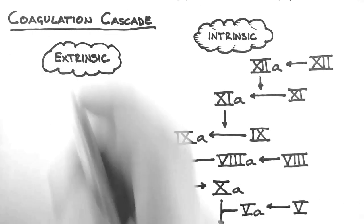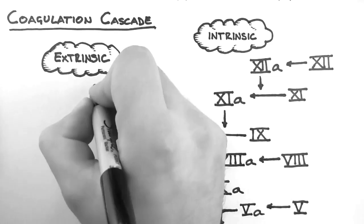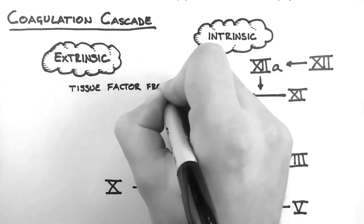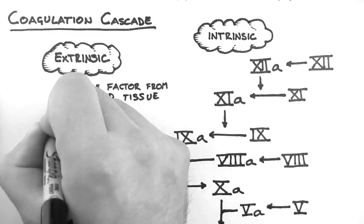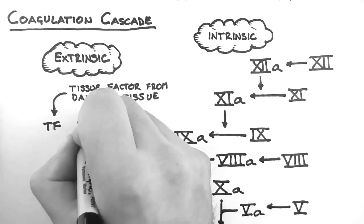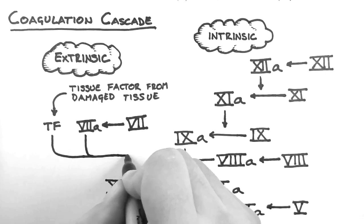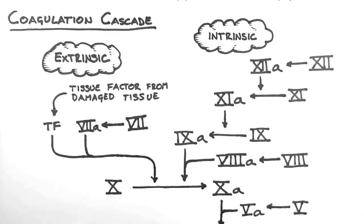Now let's look at the extrinsic pathway. This pathway is much simpler, and it is the pathway which is most important for initializing the coagulation cascade. It begins when a protein called tissue factor is released from damaged tissue. Factor 7 is converted to factor 7a, and then tissue factor and factor 7a combine to convert factor 10 to 10a. The pathway then continues on like the intrinsic pathway until fibrin is produced.